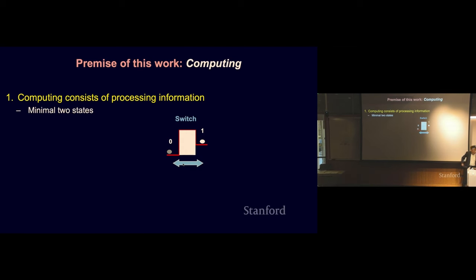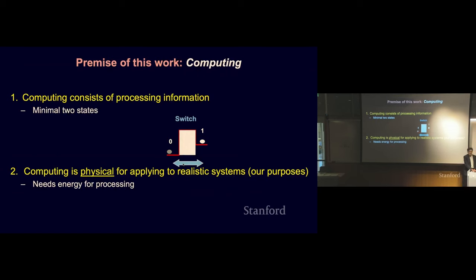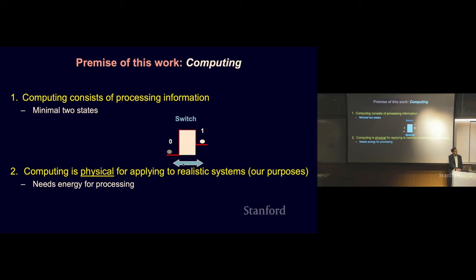The premise of this talk is twofold. Computing essentially consists of processing information. If there are two states, computing is switching between two states — that is a bit, the basic unit of computing. Computing is physical when you actually have a computer. It needs energy. Anything real in this world needs energy. Energy is the currency that everything — even from single-cell beings to inorganic materials — needs for their stability.